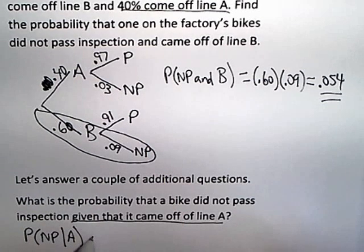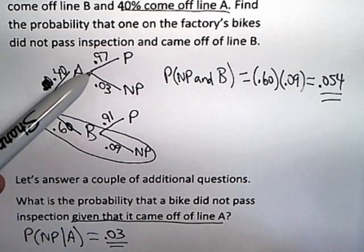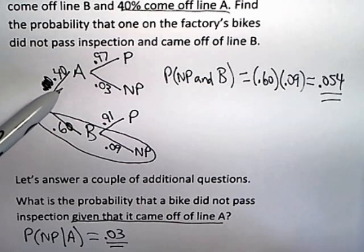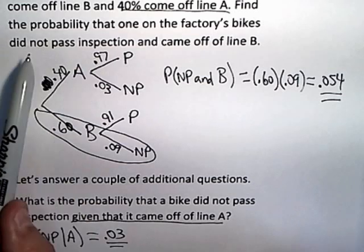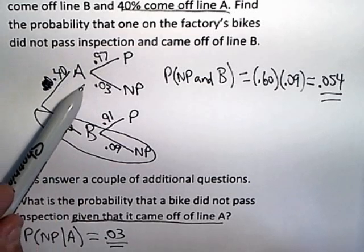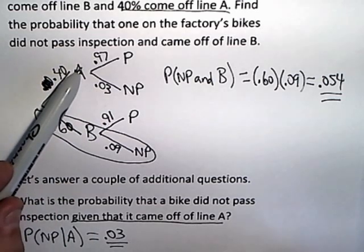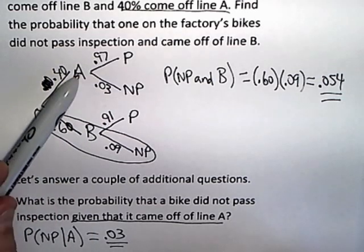So the point I'm trying to make here, and the reason I wanted to ask these additional questions, is that I want to illustrate again that these interior branches are conditional probabilities, and the condition is whatever's already happened, which is everything to the left. So if I'm trying to find the probability that something didn't pass, I know it came down A. The fact that it went down A is the condition.